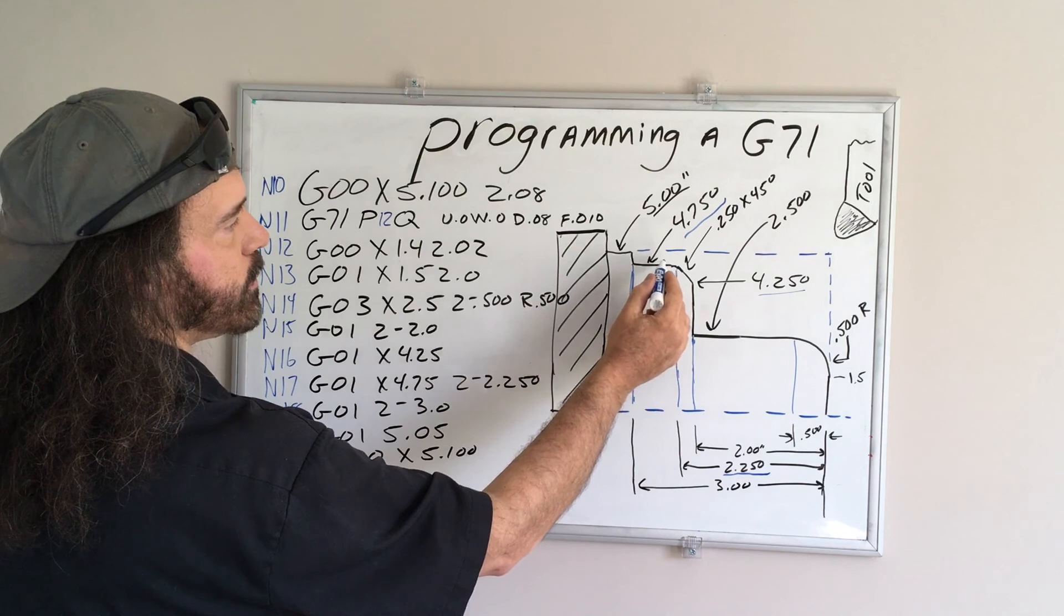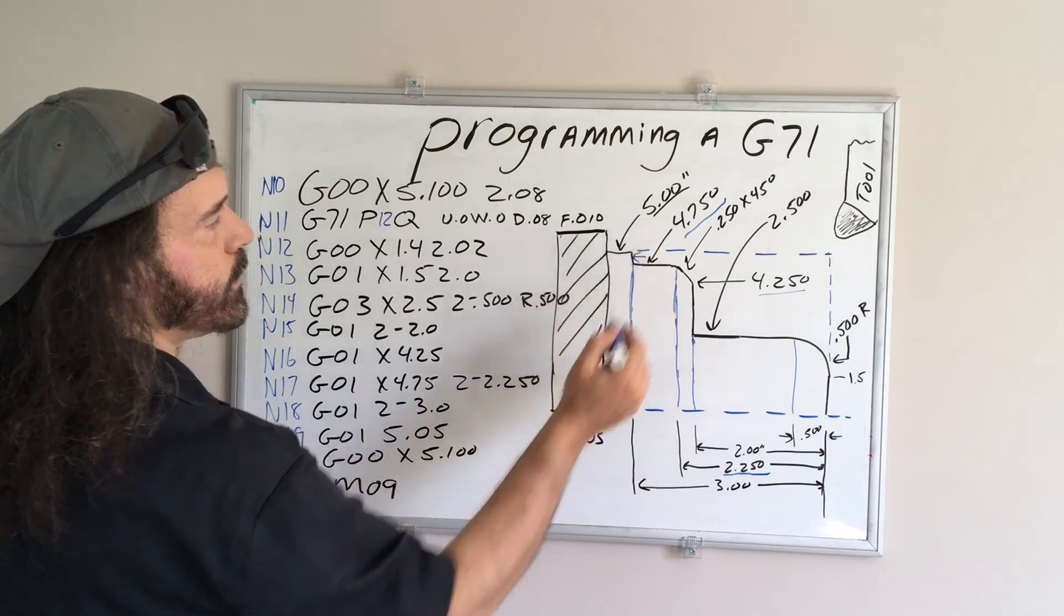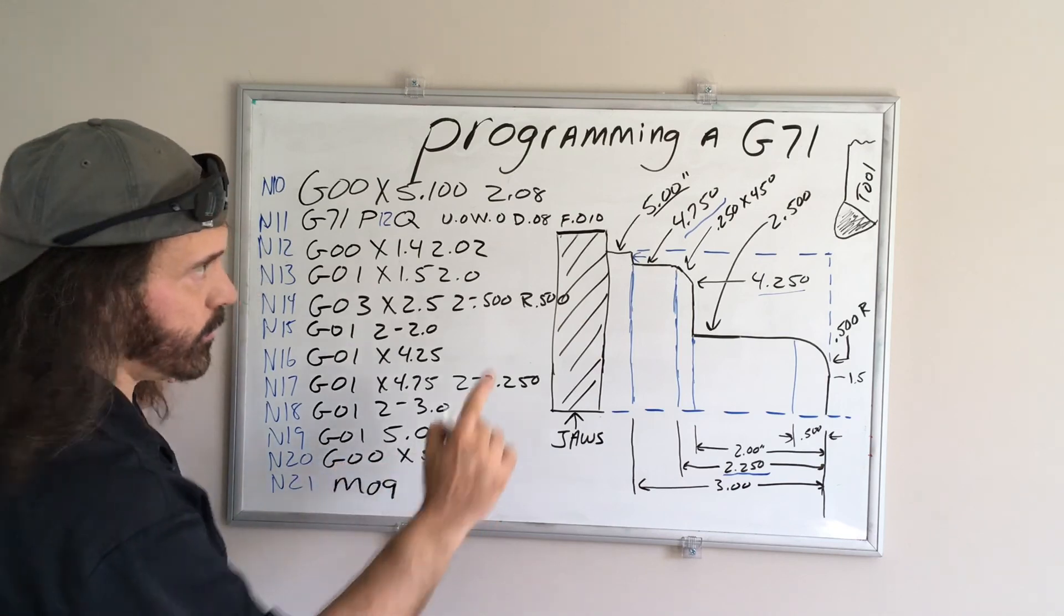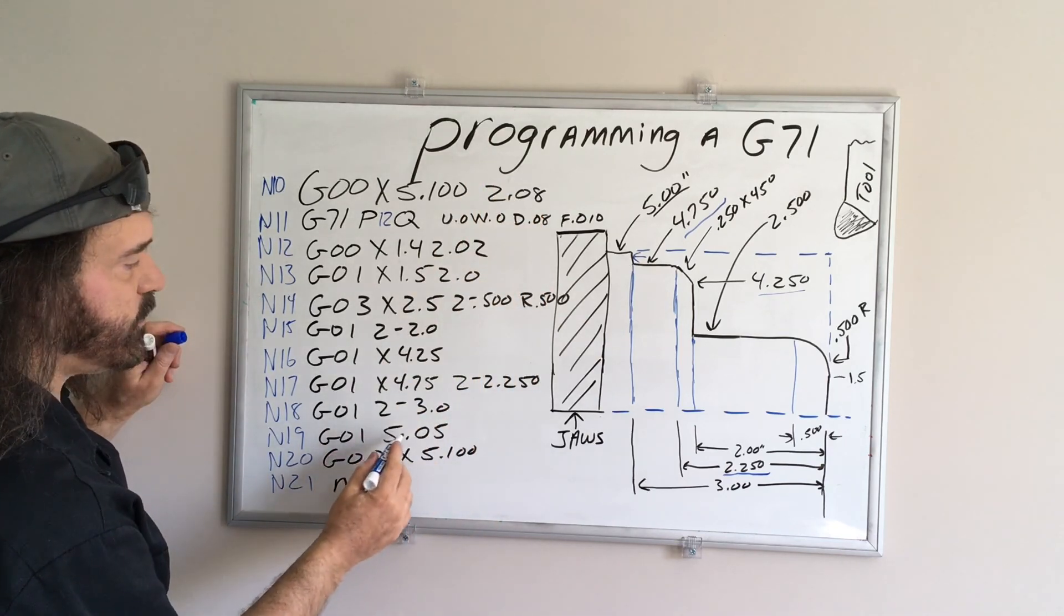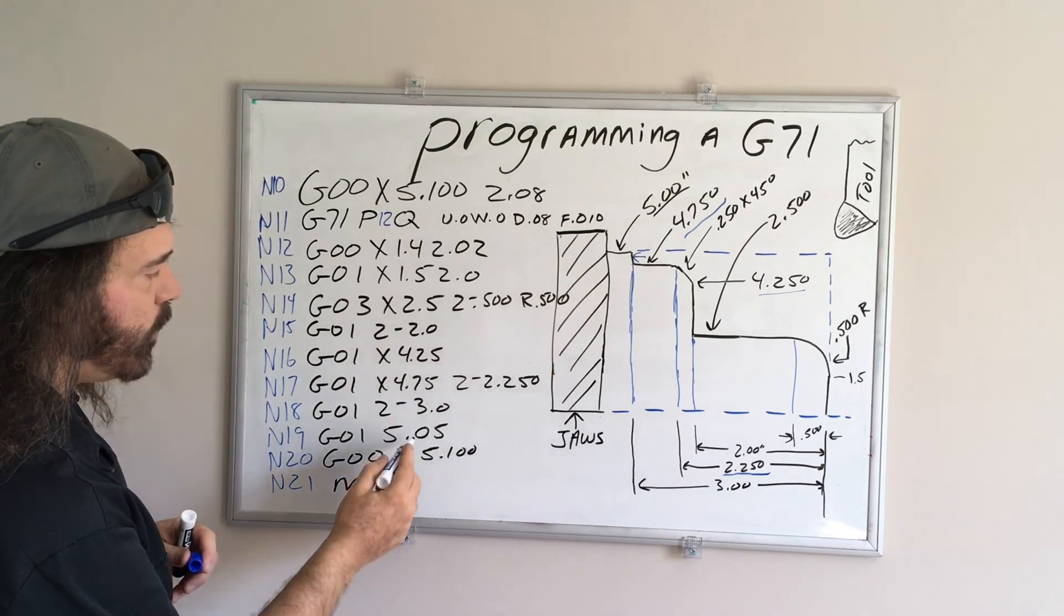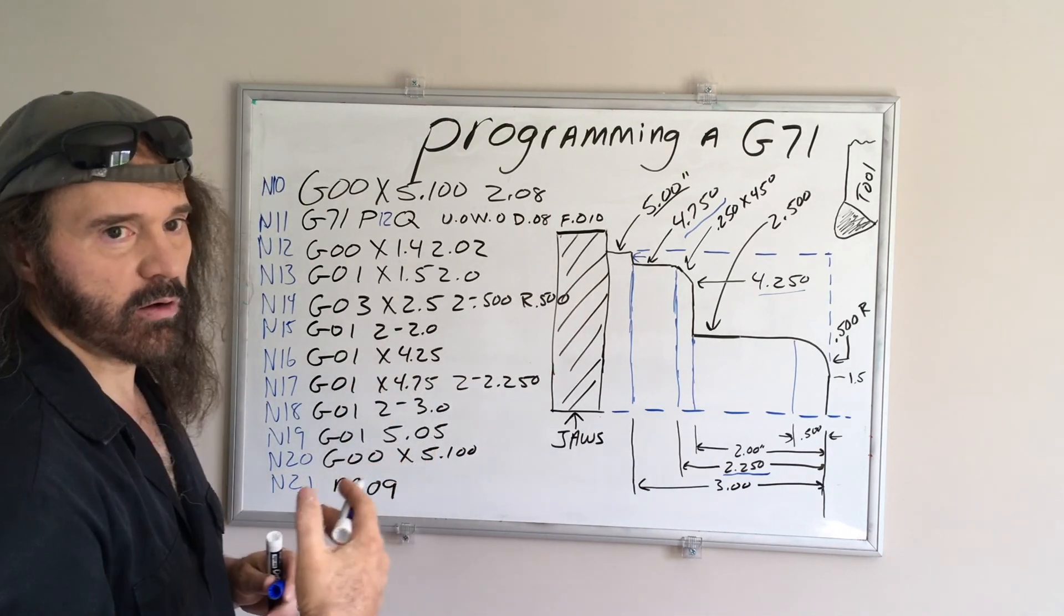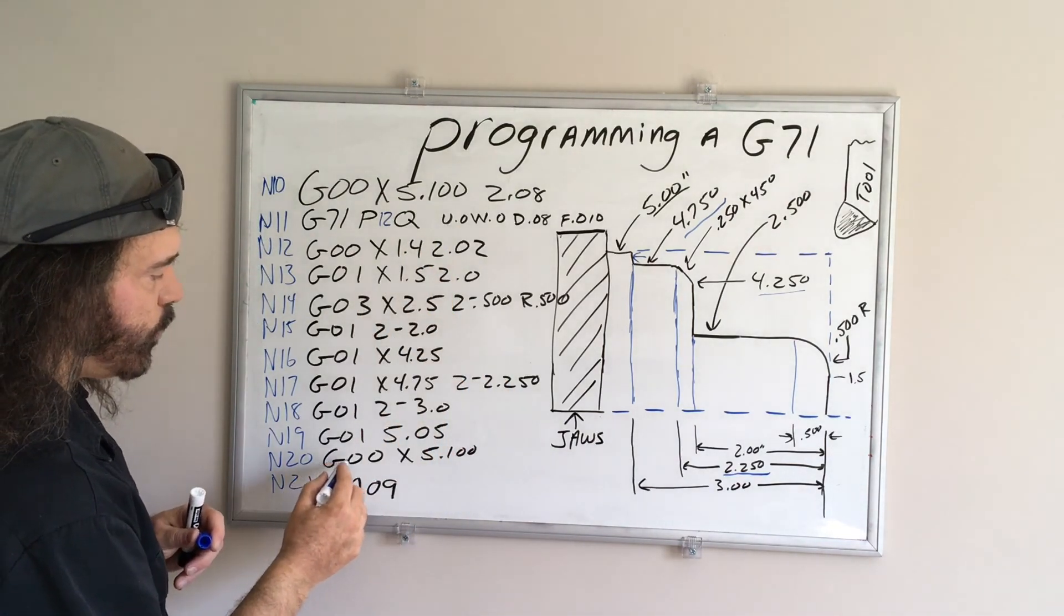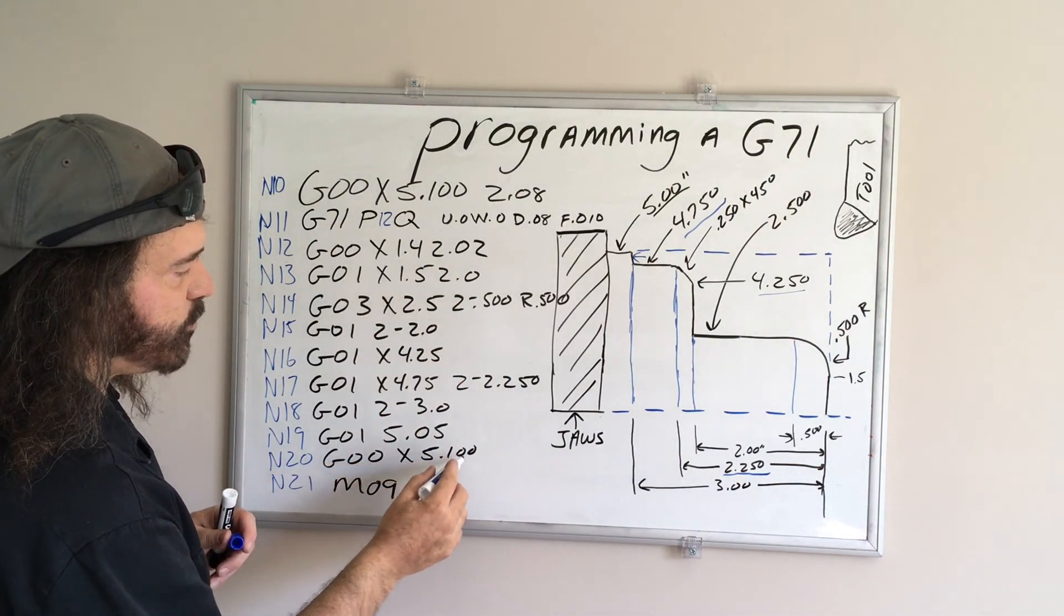Our next move, three inches deep, so we're going right to here, and now we're going to feed out of the part, x5 point, so the part is 5 inches in diameter, I'm going 50 thousandths above the diameter of the stock, feeding out, and then I'm going to do a rapid move back to x5.1.